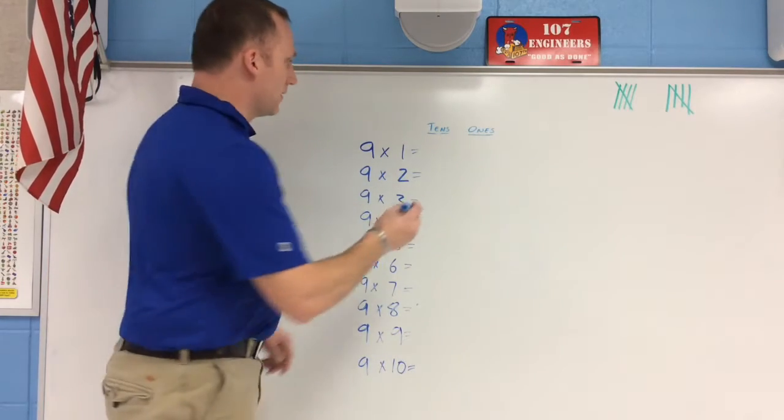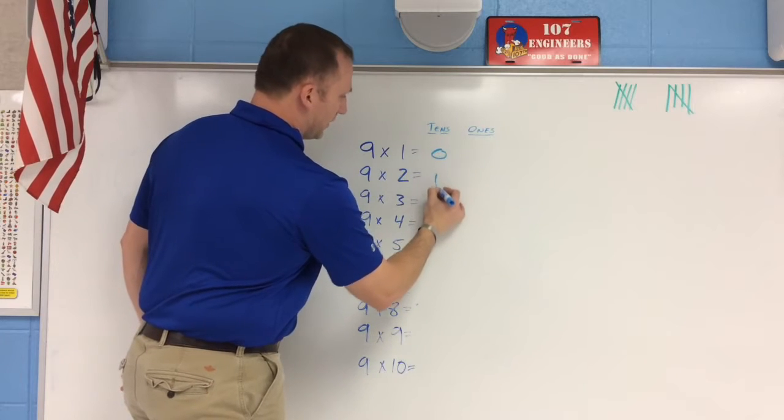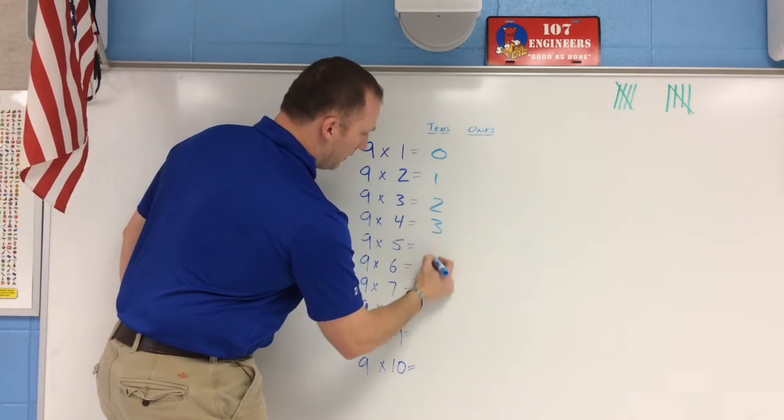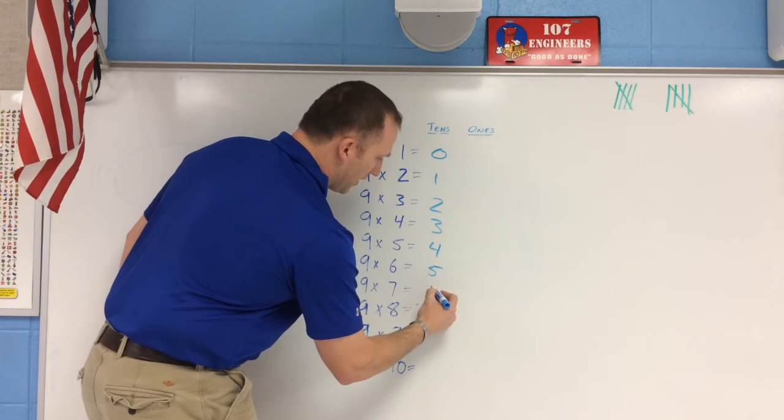I'm going to start off by counting with 0. I go down the tens place and I'm simply going to label all the way down numerically.